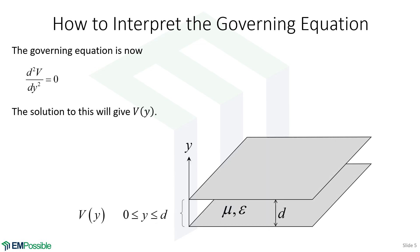We are obtaining a solution between the plates. Yes, there is an electric potential outside of the plates, but that is not what we are analyzing. We are looking at this as just a slab waveguide, and we are only interested in what is going on between the plates. So our solution is restricted there.